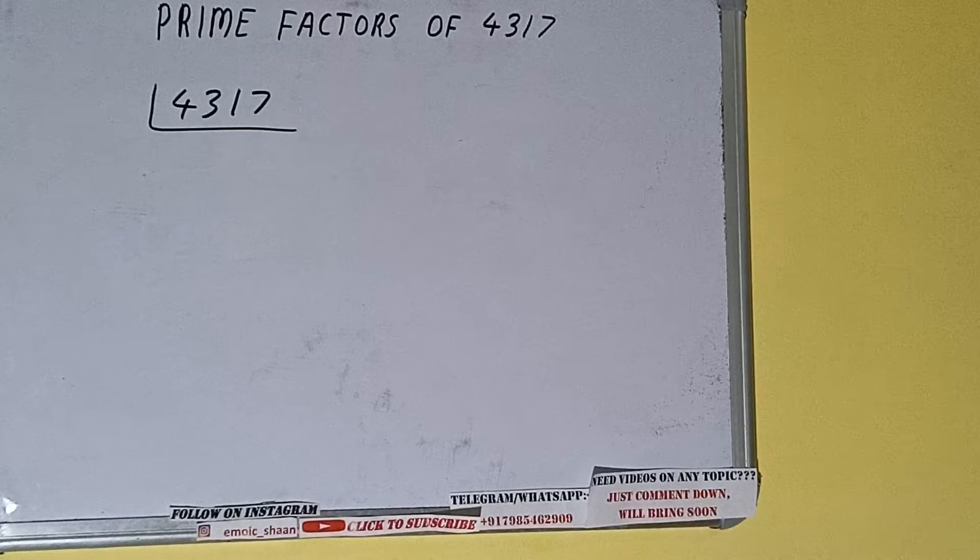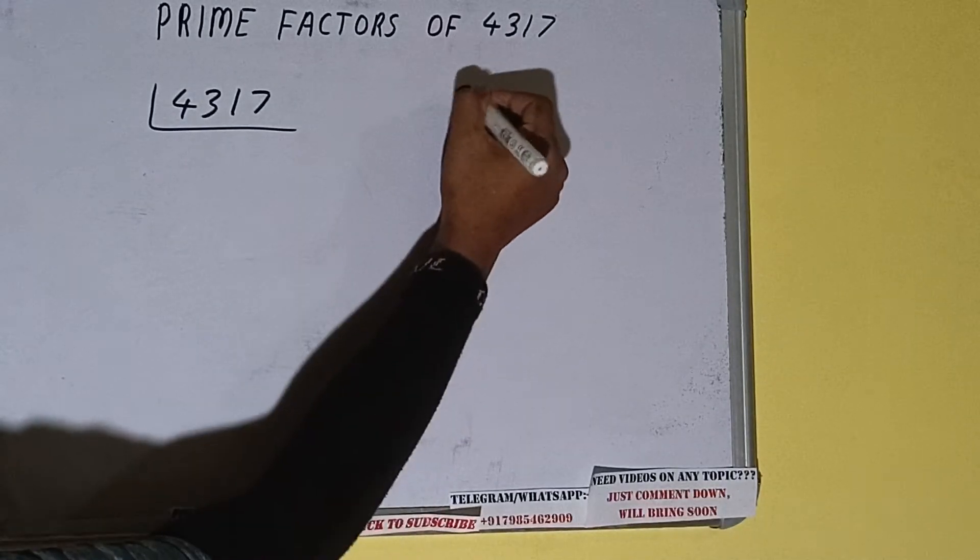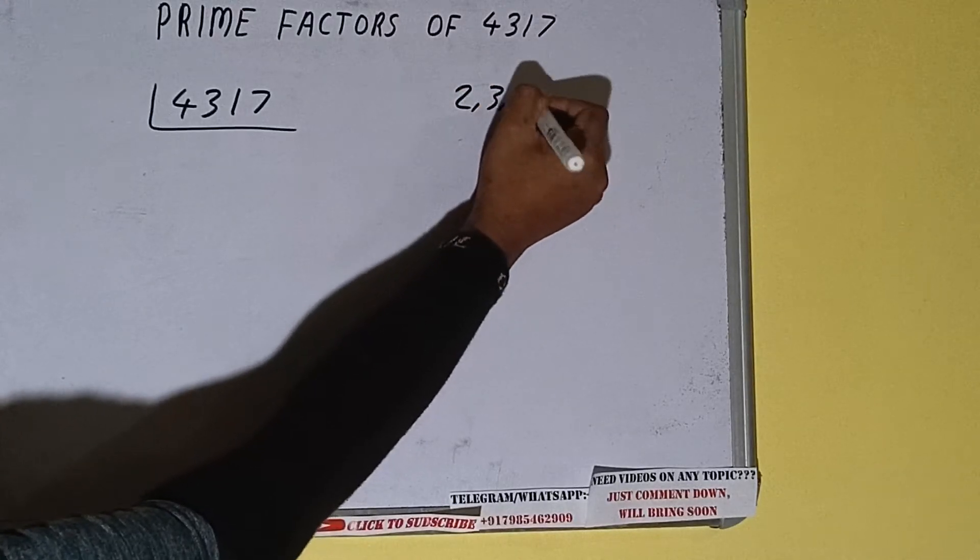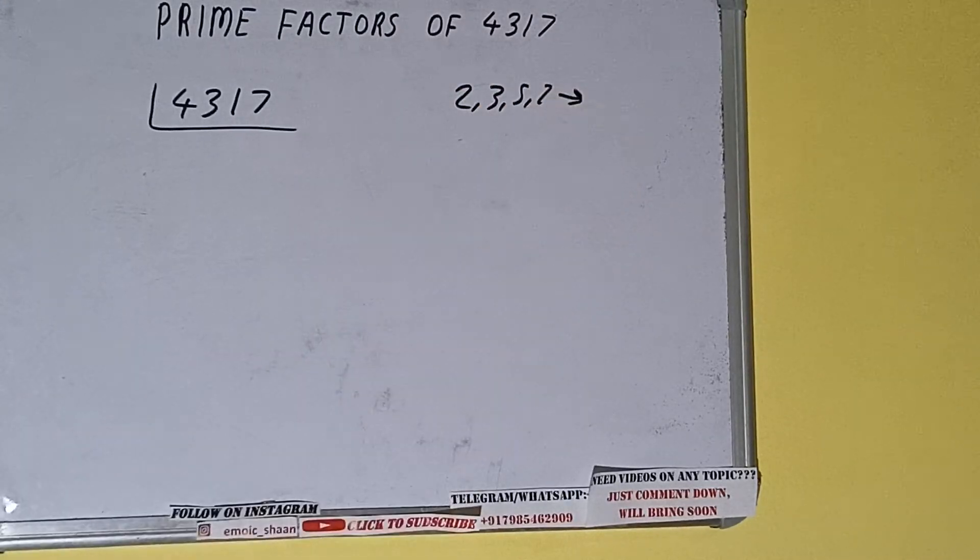...is what are prime numbers. So prime numbers are numbers that are divisible by 1 and the number itself, like 2, 3, 5, 7, and so on. All right, so we'll be checking with the lowest prime number we have.